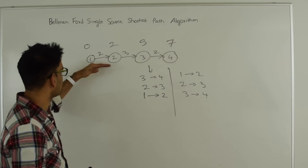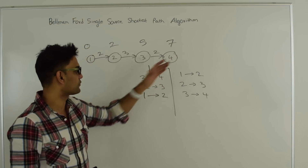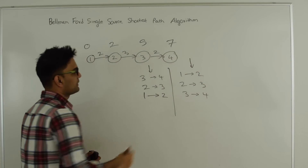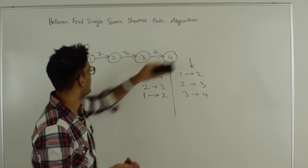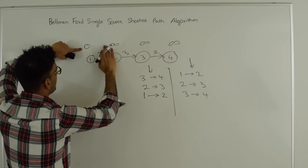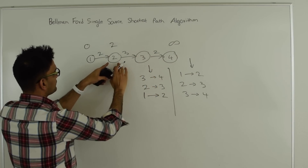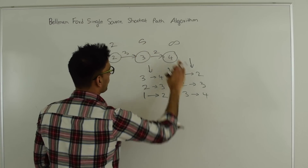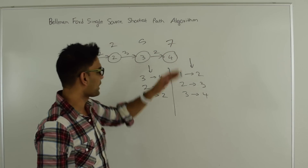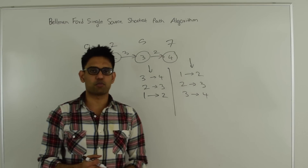In the worst case there are V-1 edges from the source to the last vertex, so we need V-1 iterations. If we had picked edges in order 1,2 then 2,3 then 3,4, we could have solved it in 1 iteration. With 1,2 we find distance of 2 is 2; with 2,3 we find distance of 3 is 5; with 3,4 distance of 4 becomes 7. But in the worst case it takes V-1 iterations, which is why we repeat this process V-1 times.